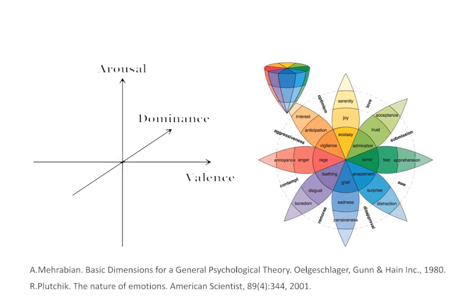PEARL leverages two distinct emotional models in psychology to better interpret a person's emotions. The first one is a continuous model that represents emotions with three numerical dimensions, including valence, arousal, and dominance. The second one is a discrete model that decomposes emotions into eight basic moods.